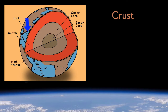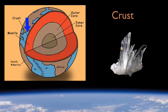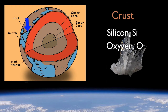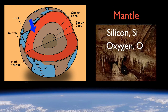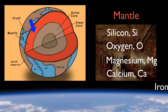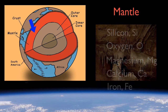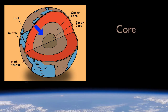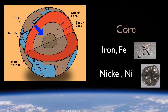Earth's crust is composed mainly of lightweight rocks containing mostly silicon and oxygen. Going deeper, the mantle is made of denser rocks — rocks rich in heavier elements such as magnesium, calcium, and iron, but still plenty of silicon and oxygen. Earth's core is made of another class of material altogether: very dense metals, almost entirely iron and nickel.